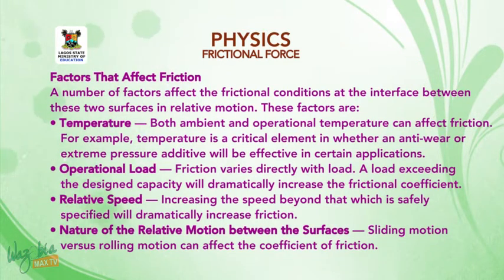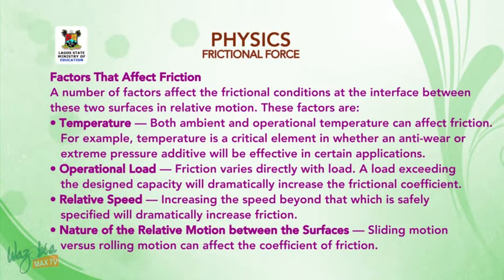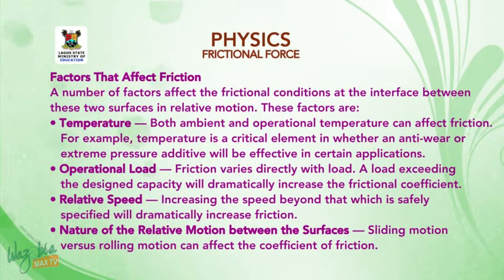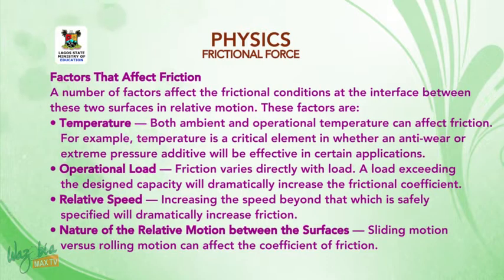Factors that affect friction. A number of factors affect frictional conditions at the interface between two surfaces in relative motion. One: Temperature. Both ambient and operational temperature can affect friction. For example, temperature is a critical element in whether an anti-wear or extreme pressure additive will be effective in certain applications. Two: Operational load.